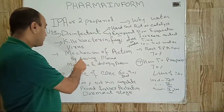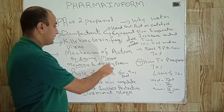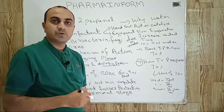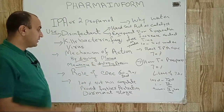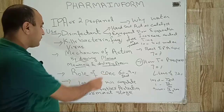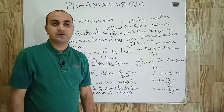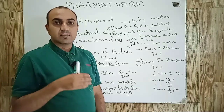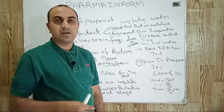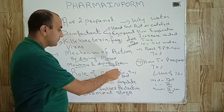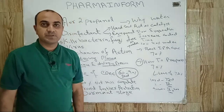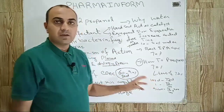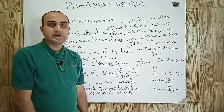It kills microbes by dissolving the plasma membrane and destroying proteins. The concentration of isopropyl alcohol plays an important role. The safe concentration range in which IPA solution gives better effects is 60% to 90% — meaning if we use our solution within these concentrations, we can claim that it is effectively performing its action.